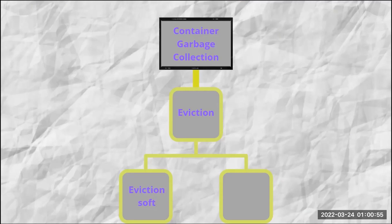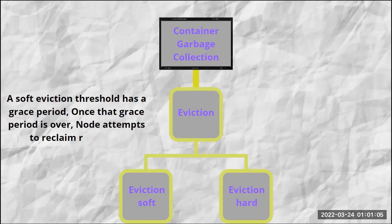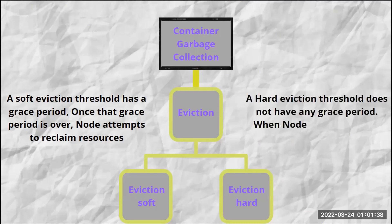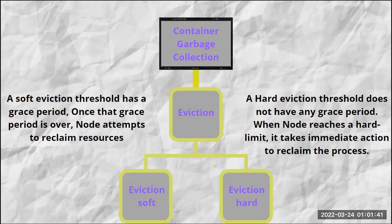What is eviction soft? An eviction soft threshold has a grace period. Once the grace period is over, the node attempts to reclaim resources. If a soft eviction threshold is met, independent of its associated grace period, the node reports a condition to indicate that the node is under memory or disk pressure. Reporting the pressure prevents the scheduler from scheduling any additional pods on the node while it attempts to reclaim resources.